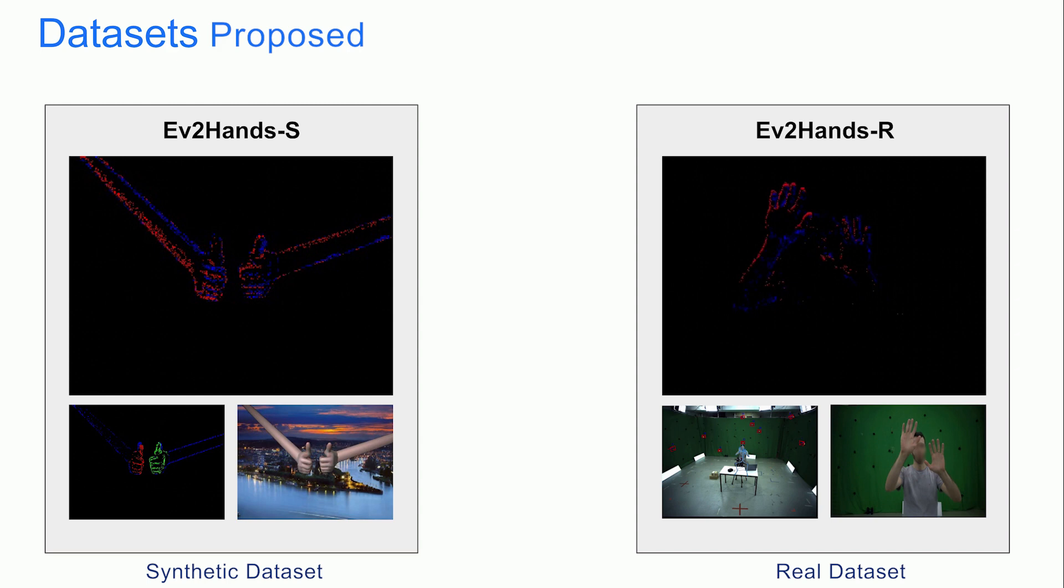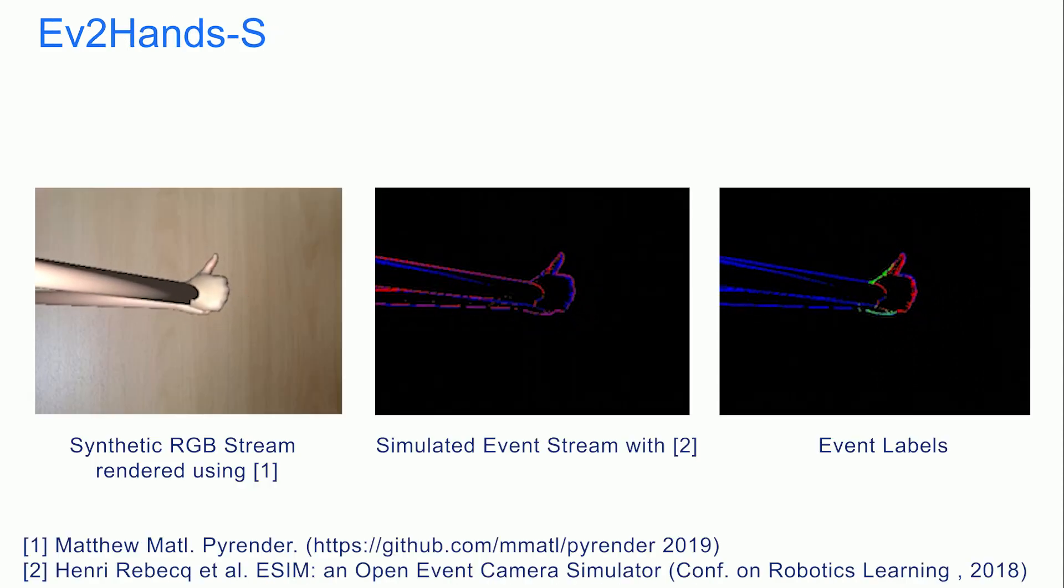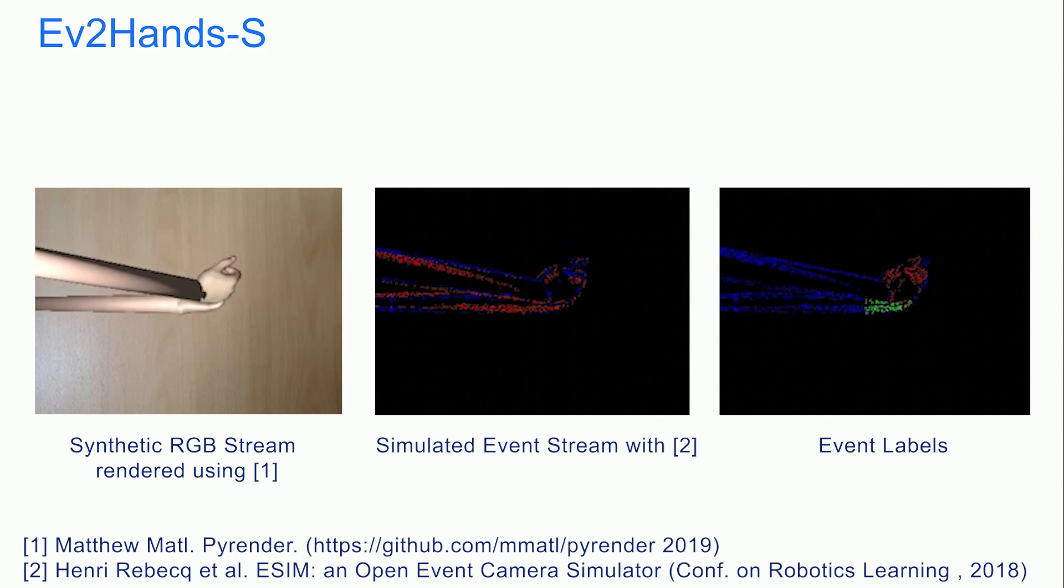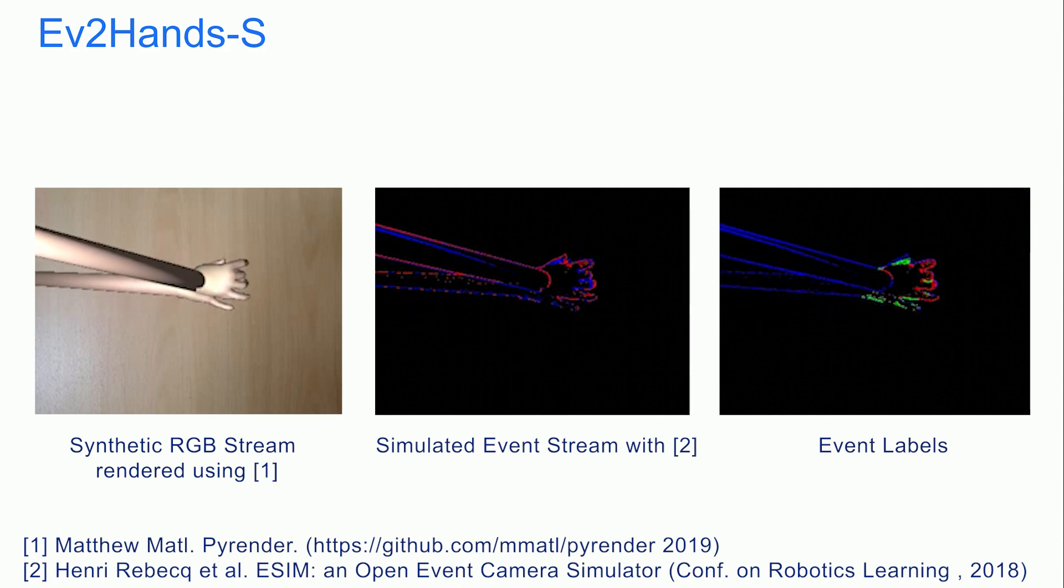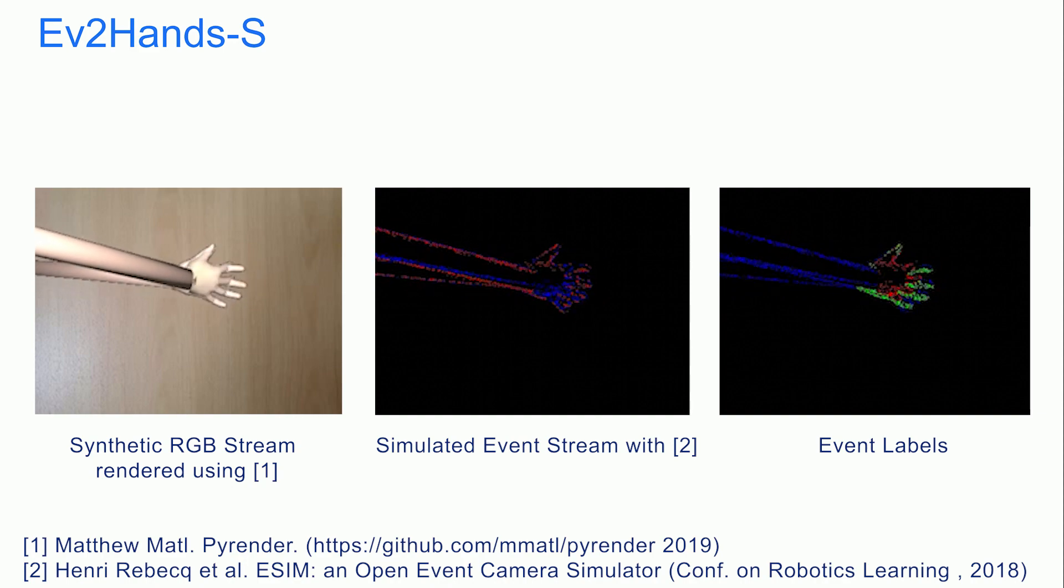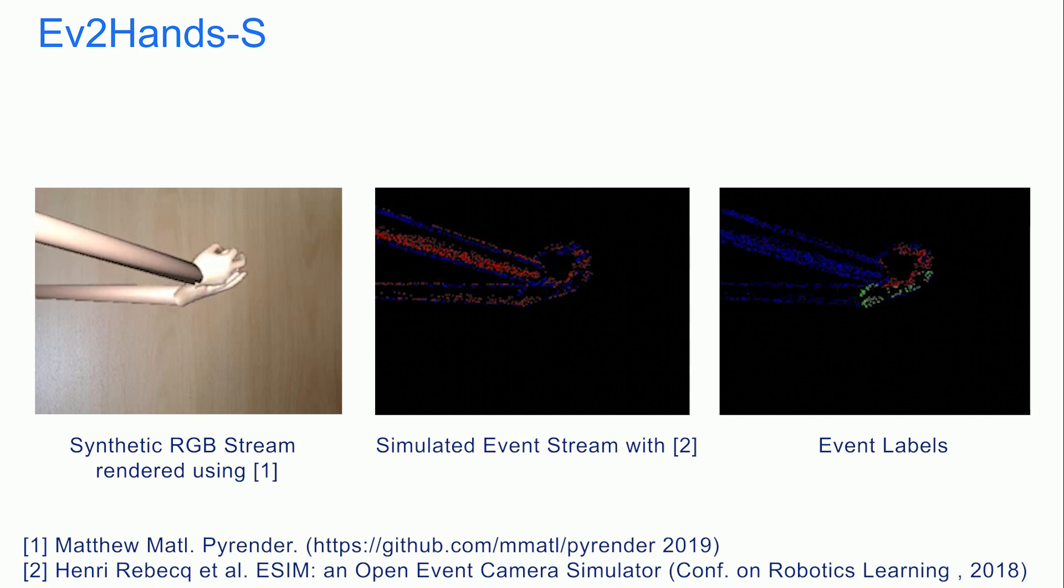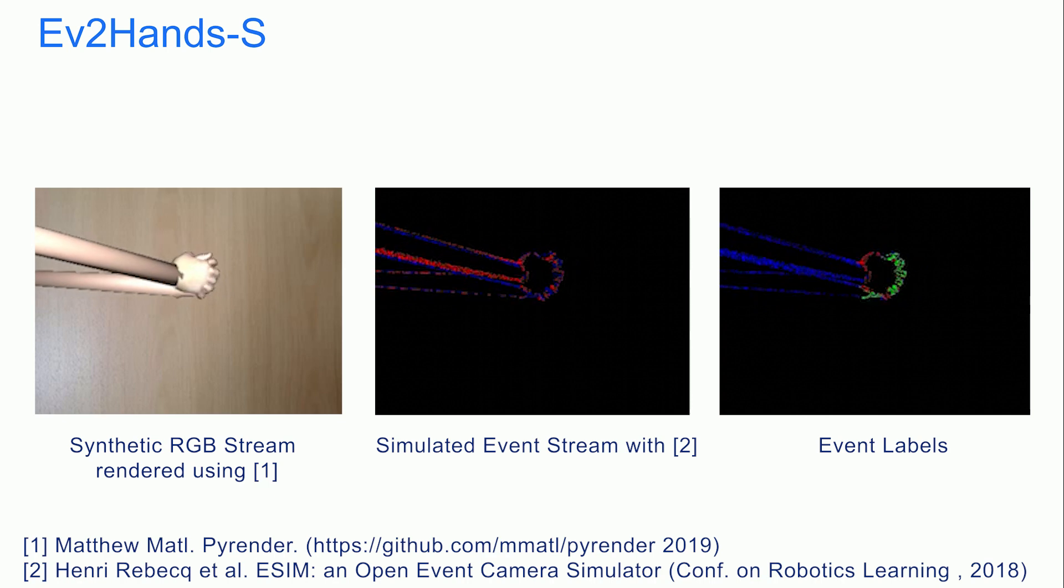As a dataset with annotated two-hand interactions and an event stream is currently not available, we synthesize a new large-scale dataset and record a new real event stream dataset with 3D hand pose annotations. We generate our synthetic dataset by rendering synthetic videos of two hands interacting, which are then fed into an event stream simulator to produce event streams. The event labels are obtained by retrieving the pixel indices of the segmentation mask of each hand.